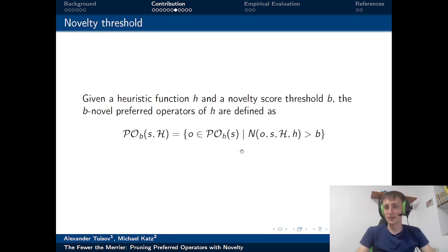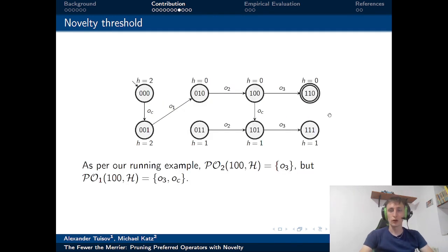All the methods I described are pretty straightforward. For example, for the first method with a threshold, we just define some threshold B and we take into consideration in our new preferred operator set only the operators whose novelty was greater than B. Going back to our running example, we got the novelty score of O3 which was infinite, and the novelty score of OC in state 100 was equal to 2. So preferred operators bounded by 2 will include both O3 and OC.